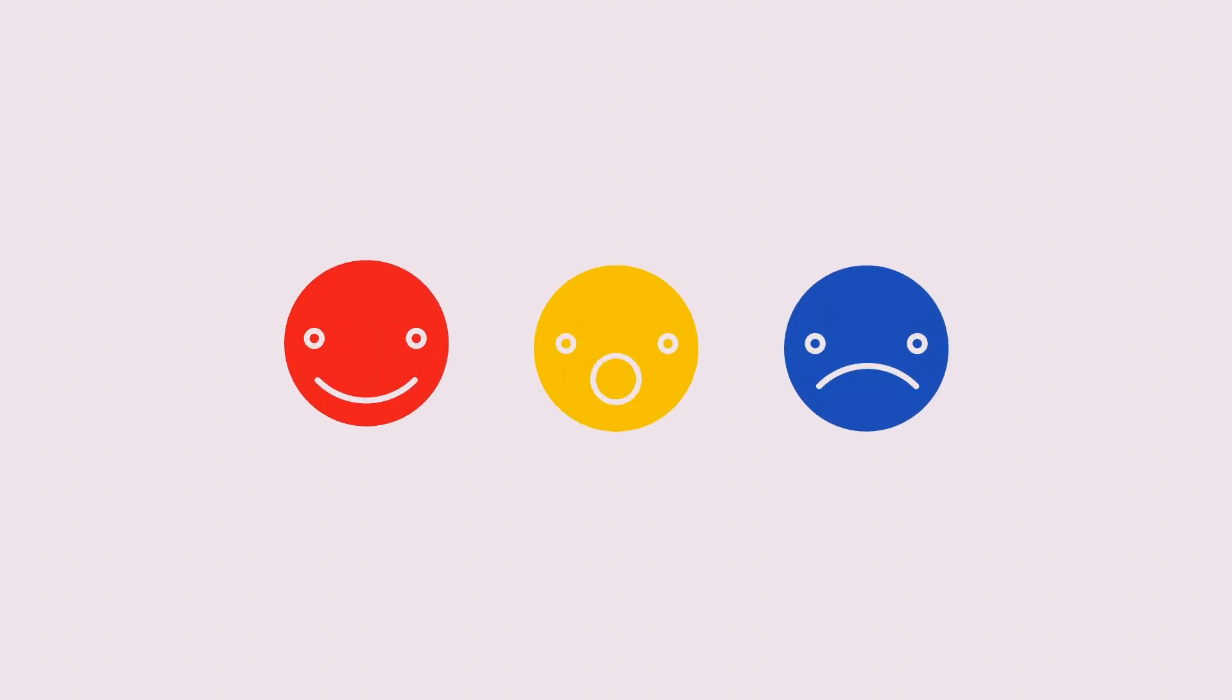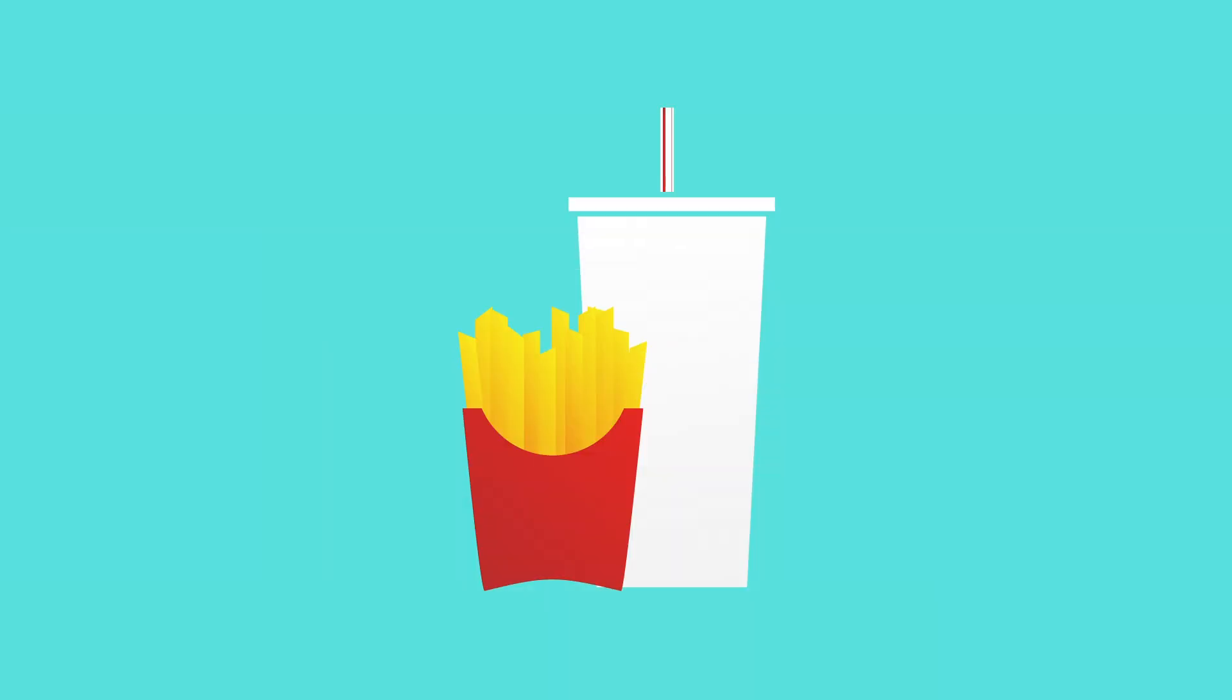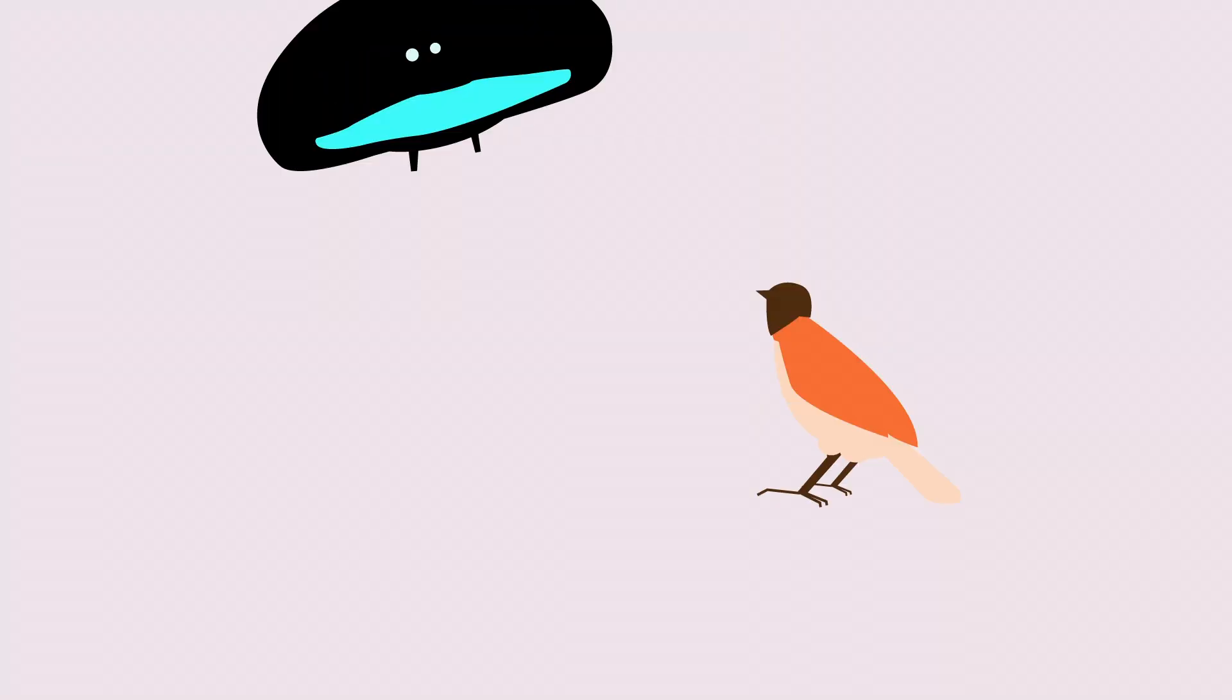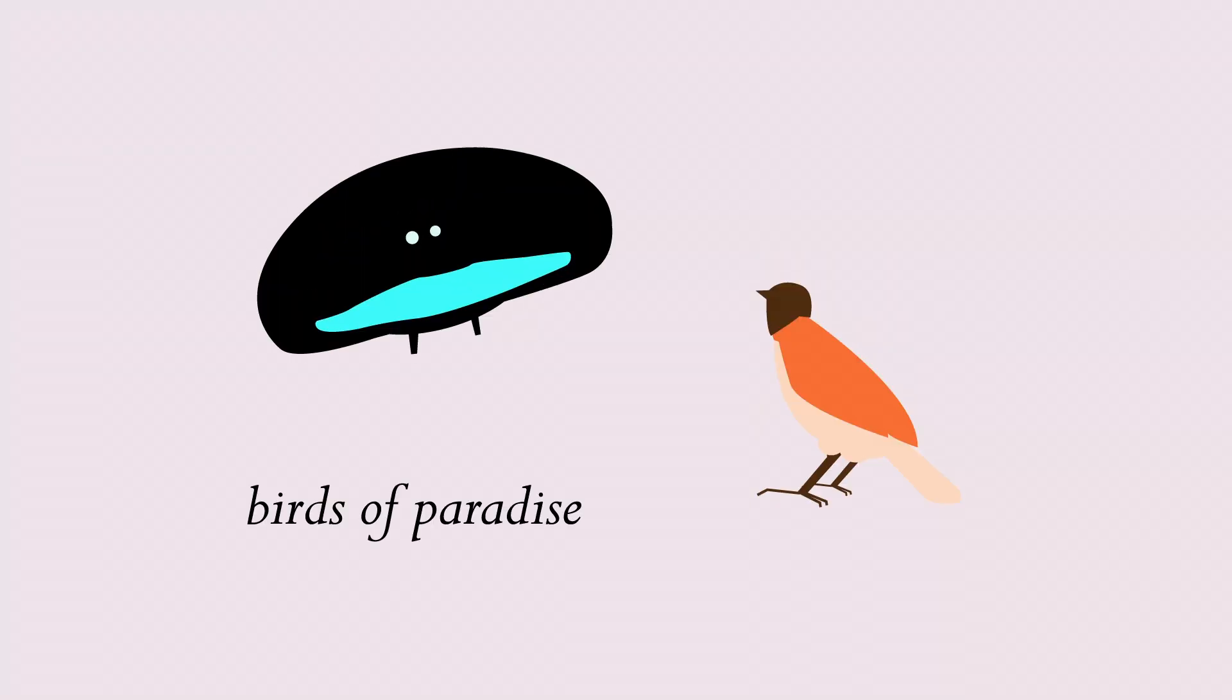There are many ways that we use color. Artists use different colors to express emotions. Marketers attach colors to their brands to make them more recognizable. Animals use colors to ward off predators or attract mates, and people do too. What is color?